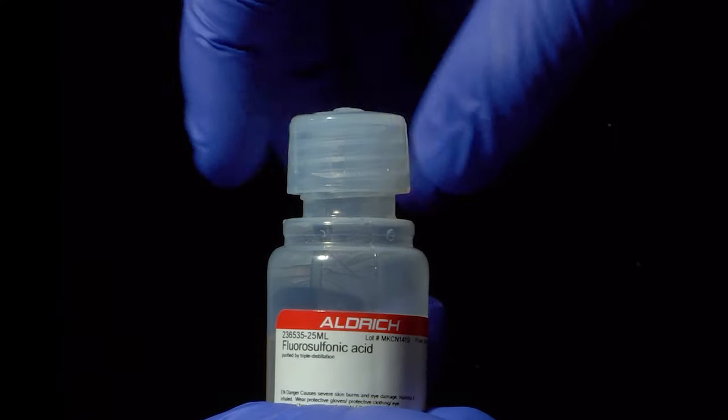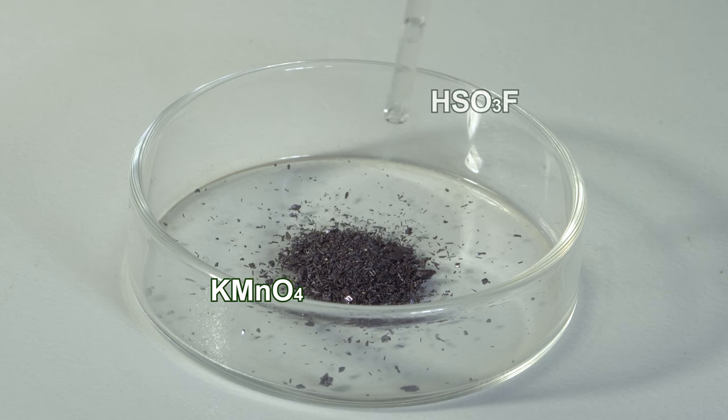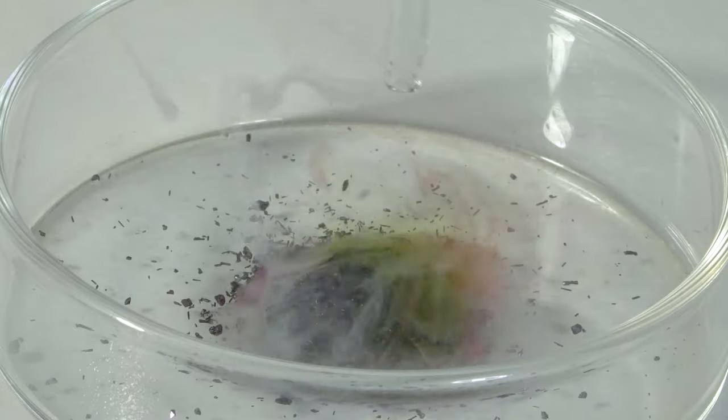Permanganyl fluoride, that forms by mixing fluorosulfonic acid and potassium permanganate, reacts with ammonia in a similar way.